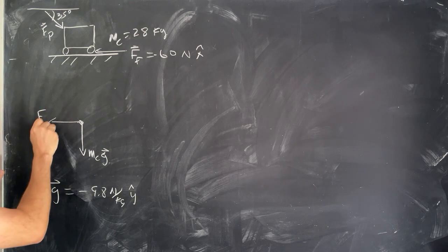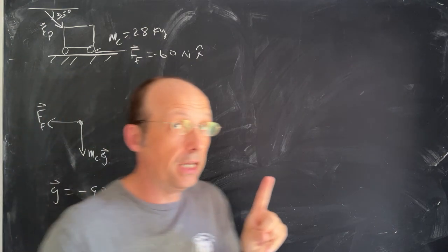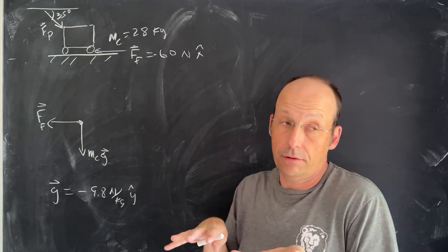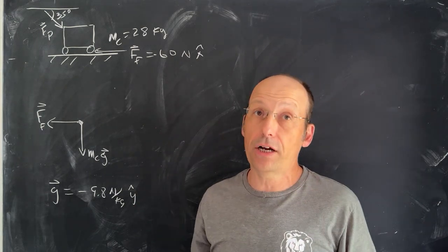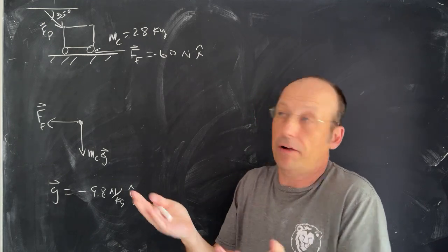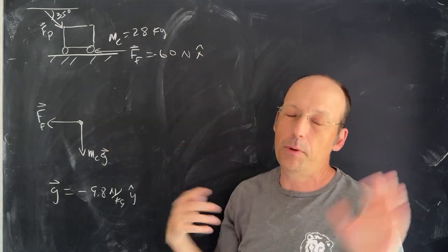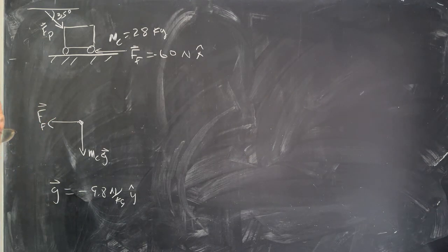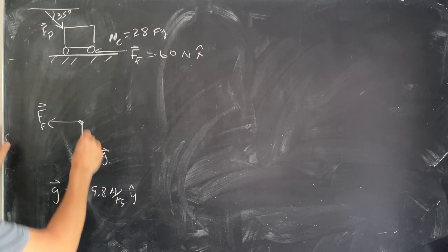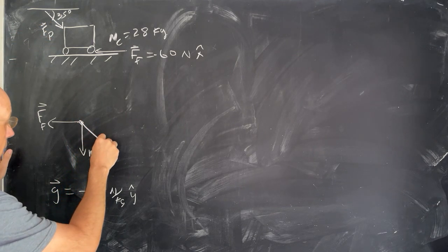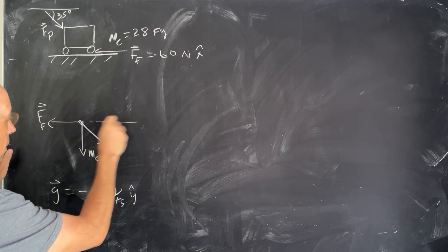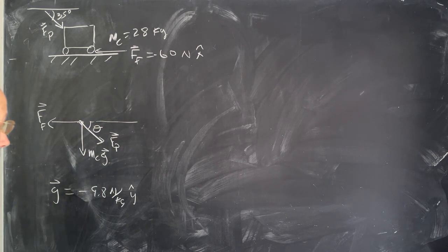Next, I have the frictional force pushing back. Let's put F friction. Friction is a force that interacts parallel to the surface, in the opposite direction of the sliding. There's also the nurse touching the cart, so we put that force on there — Fp for the push — and that angle, I'll call theta, is 35 degrees.